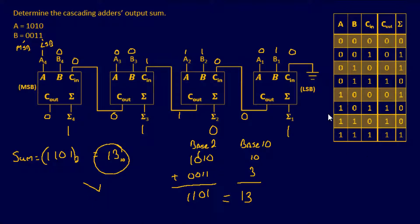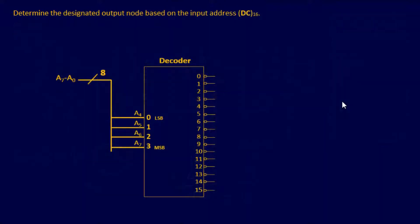That one's pretty easy. Let's go do another one. For our next example, we've got a little curveball here. We have to determine the designated output node based on the input address DC. And DC is in a hexadecimal format. It's a base 16.